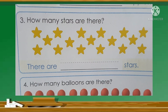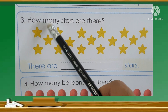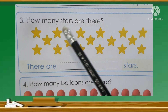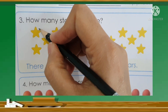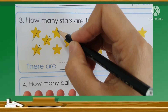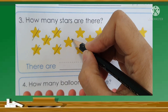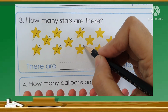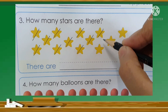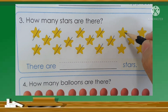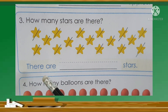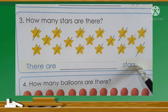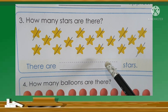Now let's go to number 3: How many stars are there? Now let's count how many stars. 1, 2, 3, 4, 5, 6, 7, 8, 9, 10, 11, 12, 13, 14, 15, 16, 17. So there are 17 stars. We will write the word 17.